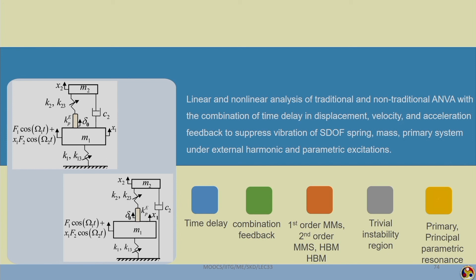In direct excitation the term F₁ cos(ω₁t) is there, and in case of parametric excitation the term is X₁F₂ cos(ω₂t). Here one can take two different types of forcing amplitude and frequency: F₁ and F₂ are the forcing amplitudes, and ω₁ and ω₂ are the forcing frequencies. The stack actuator has a displacement of δ₀, which is a function of the voltage applied to the system. K₂ is the linear spring constant, K₂₃ is the non-linear spring constant, mass M₂ has displacement X₂, and mass M₁ has displacement X₁.